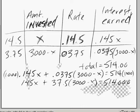And we can use calculators, and so we'll do that. 37.5 times 3,000 equals 112,500.